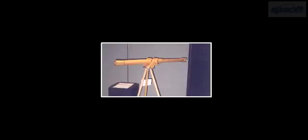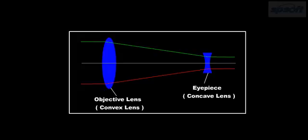A Galilean telescope is defined as having one convex lens and one concave lens. The concave lens serves as the ocular lens or eyepiece, while the convex lens serves as the objective.